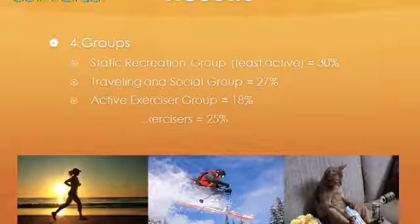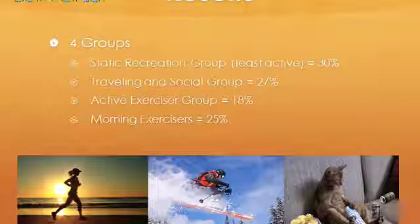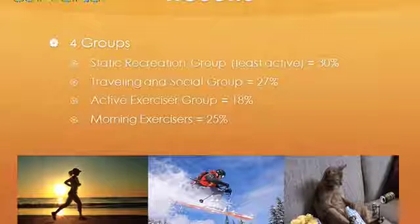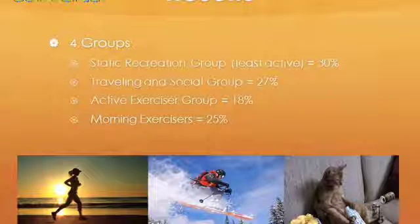The four groups were: the static recreation group (30%), the traveling and social group (27%), the active exerciser group (18%), and the morning exercisers (25%). When the four groups were analyzed for demographic differences, it was found that there were more men than women in the morning exercisers and active exerciser groups, and the morning exercisers also tended to be older.